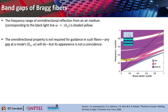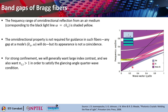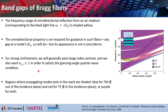This is basically giving you omnidirectional reflection from an air medium, and that is where it has a boundary with the light line ω = Ck_z. This particular black line is basically the light line in air and this gives you the frequency range of omnidirectional reflection from the air medium. Omnidirectional property is not required for guidance in this kind of fiber — as you can see any gap at the modes will actually do. For strong confinement, we will generally want to have large contrast between the refractive indices.